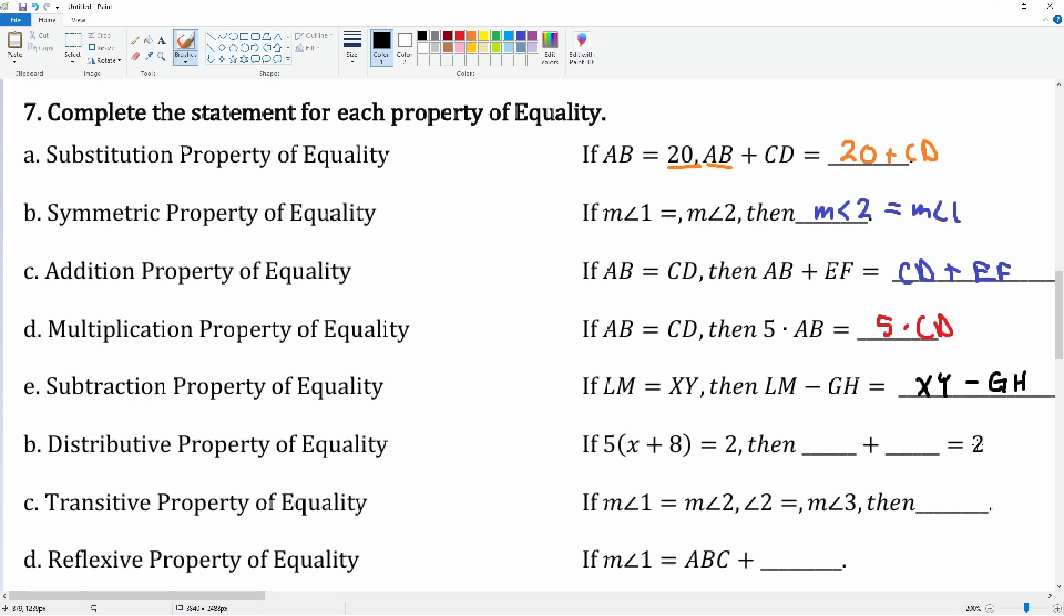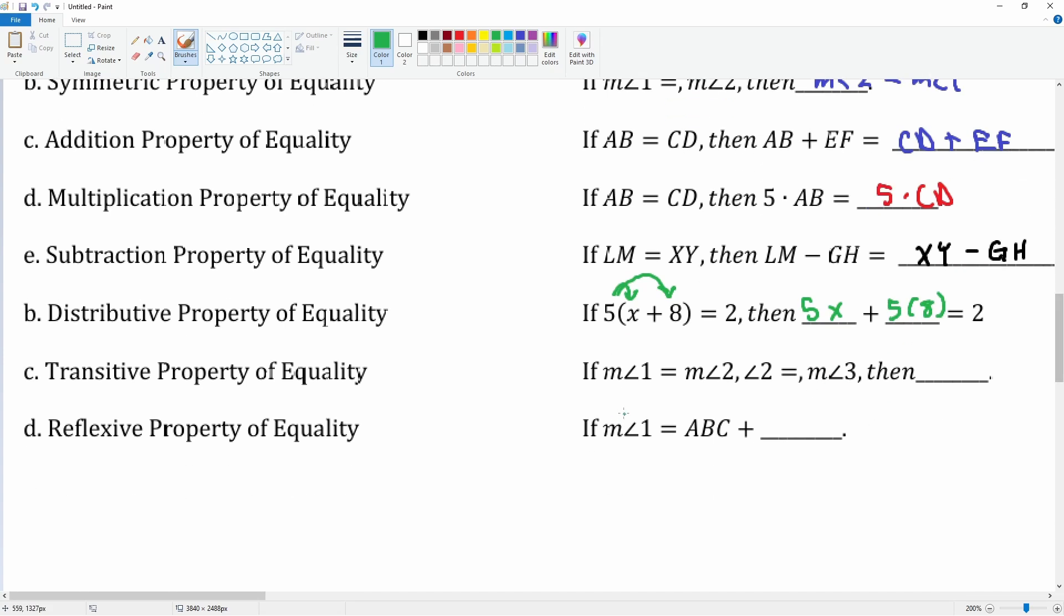The distributive property is when the 5 is distributed to each term. Here, 5 is going to be multiplied by the X and 5 is going to be multiplied by the 8.